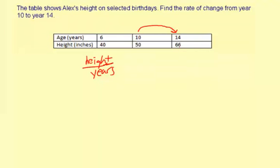So we need to find the amount of change of height and the amount of change in years also. The amount of change in height is 66 minus 50 because we went from 50 to 66. So we can find that by 66 minus 50, and that is 16.